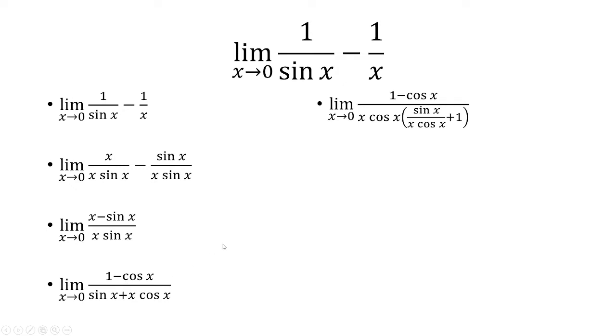Now we can factor out x times cosine of x from the bottom. And that gives us sine of x over x times cosine of x plus 1.